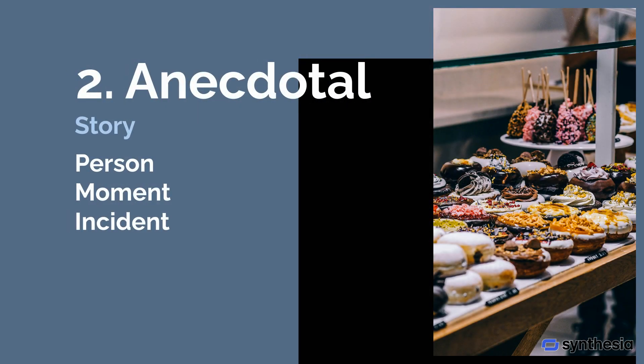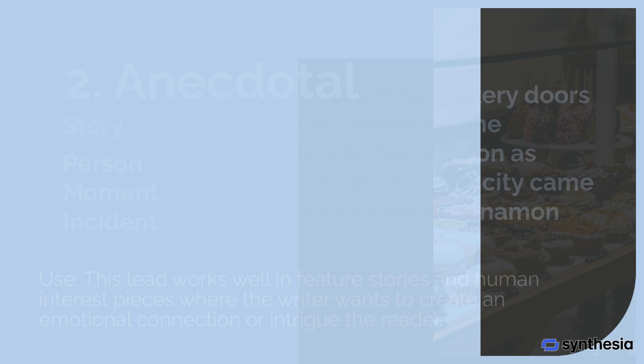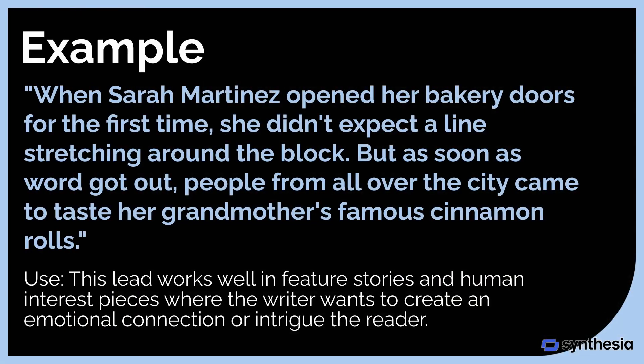2. Anecdotal. An anecdotal lead starts the story by telling a short, interesting story or personal account that draws the reader in. It focuses on a specific person, moment, or incident that illustrates the broader theme of the article. Example: When Sara Martinez opened her bakery doors for the first time, she didn't expect a line stretching around the block. But as soon as word got out, people from all over the city came to taste her grandmother's famous cinnamon rolls. This lead works well in features and human interest pieces where the writer wants to create an emotional connection or intrigue the reader.